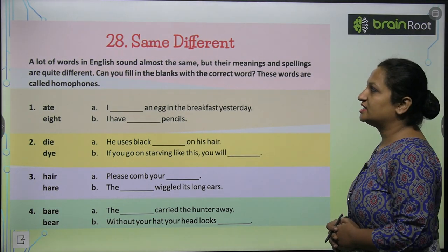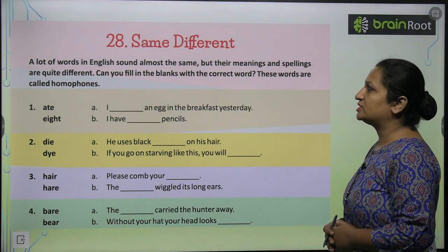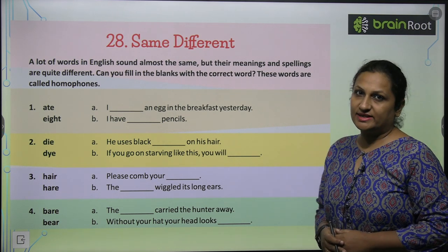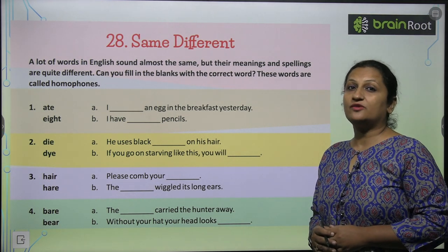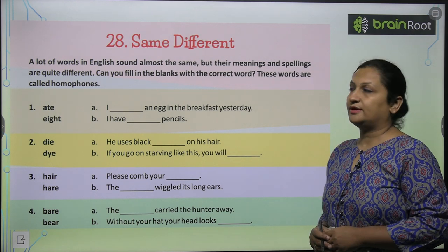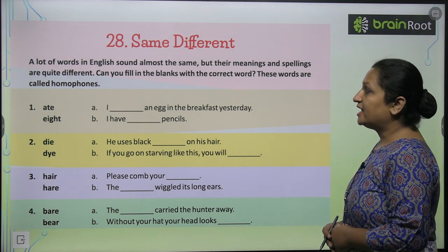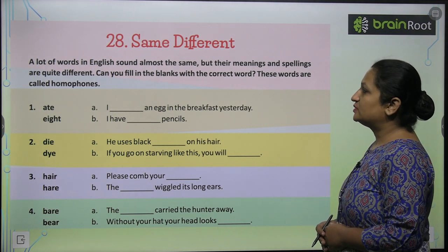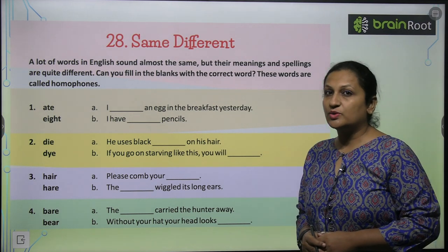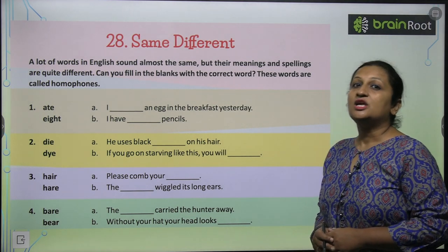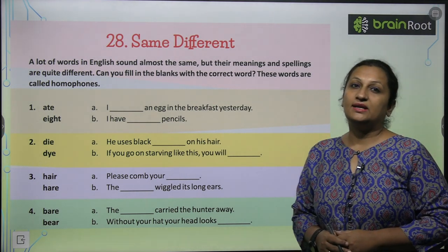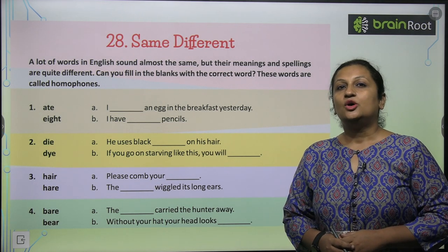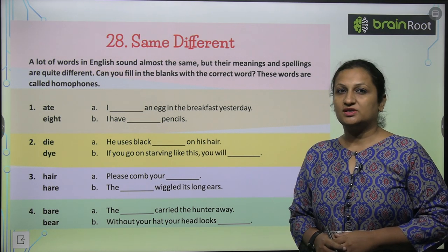A lot of words in English sound almost the same but their meaning and spelling are quite different — unki jo sound hoti hai woh bilkul same hoti hai. Can you fill in the blanks with the correct word? These words are called homophones — aise words jinki sound same hoti hai lekin meaning aur spelling different hoti hai.